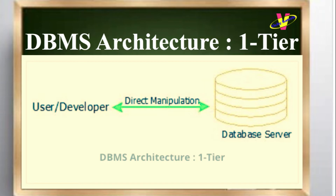DBMS Architecture One-tier. Tier means level. The one-tier architecture of DBMS is the simplest among all, which gives users and developers the ability to communicate directly to the database without any intervention of a third party. It also enables developers and users to make changes, manipulate, and manage the database directly. This type of architecture is mainly used by developers for testing and data management purposes. Cloud-based drives and personal computer systems can be possible examples of one-tier architecture.